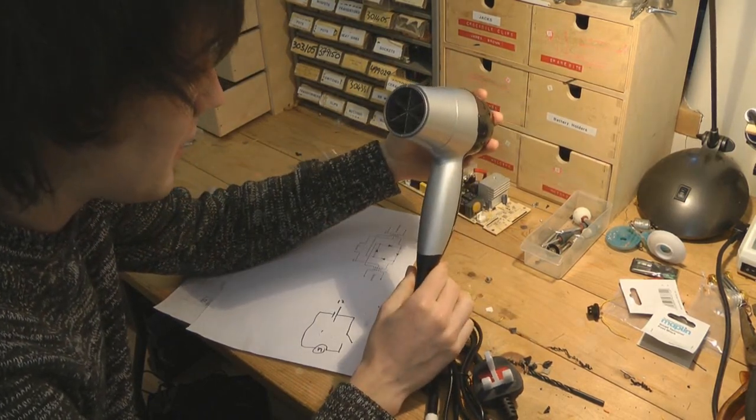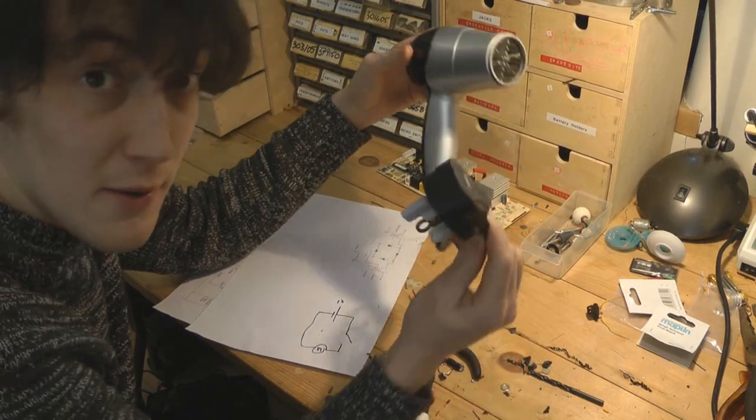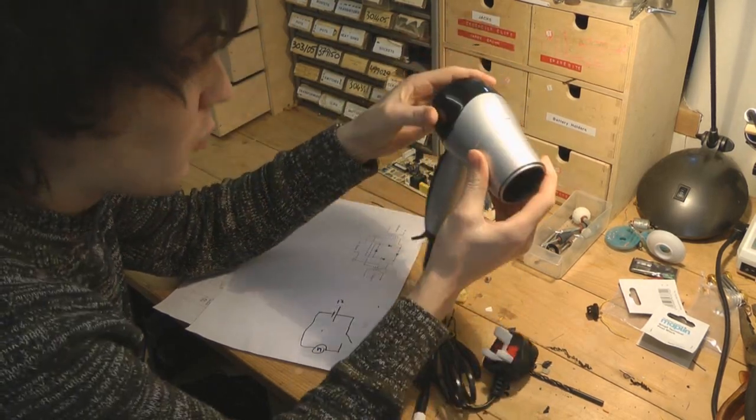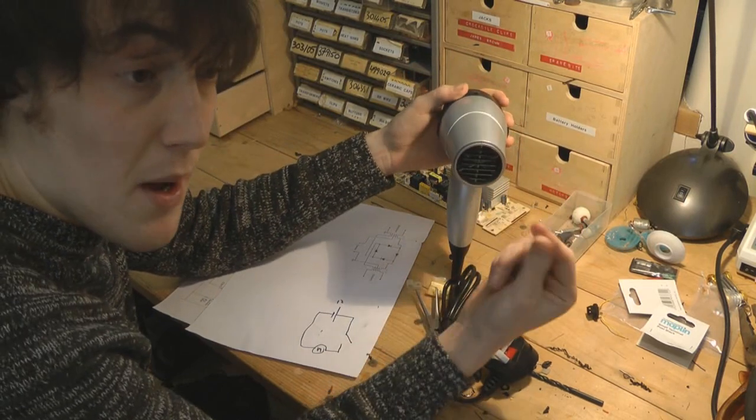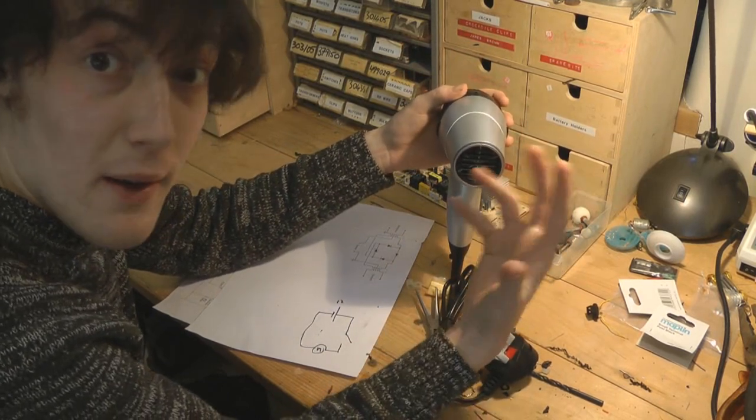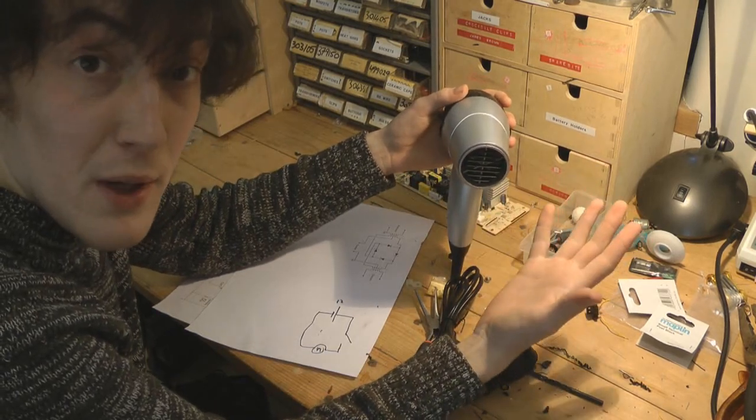What we're going to do with it today is modify it to run off 12 volts DC as opposed to 240 AC. What I want to use this for is for blowing vermiculite or some other granular or particulate insulate material into a confined roof space that can't really be reached by hand.